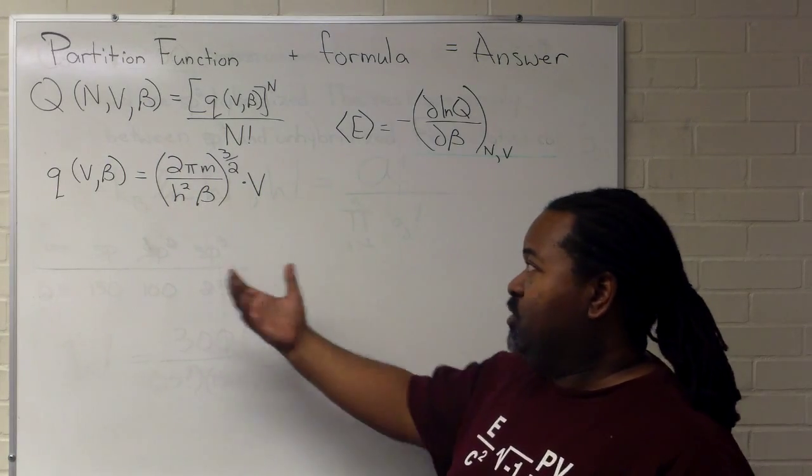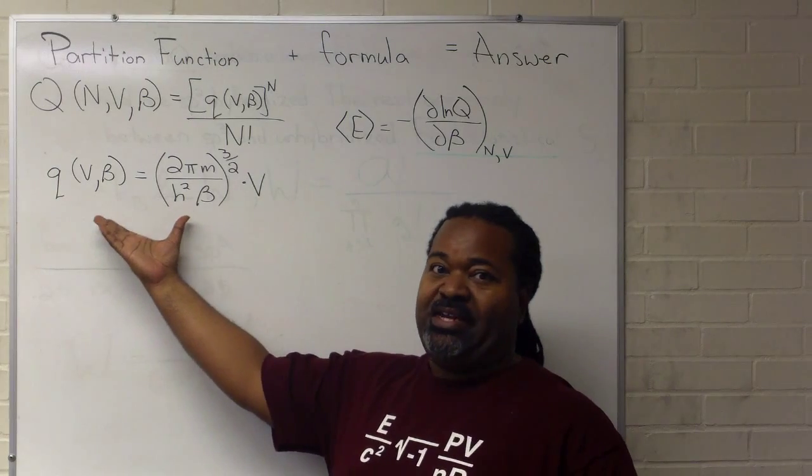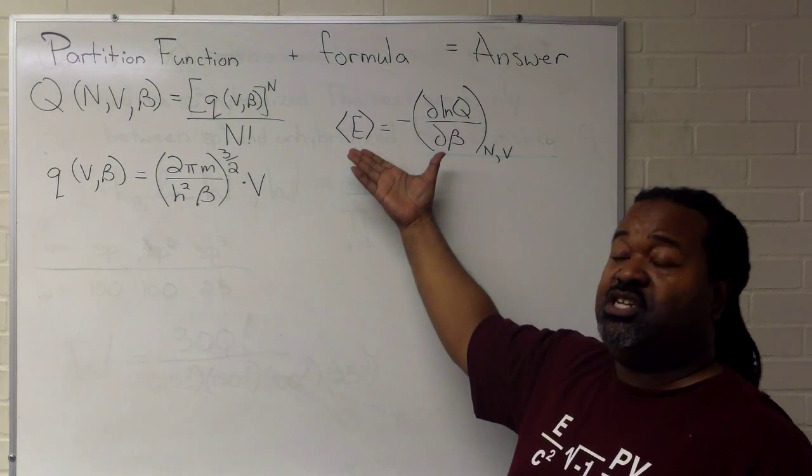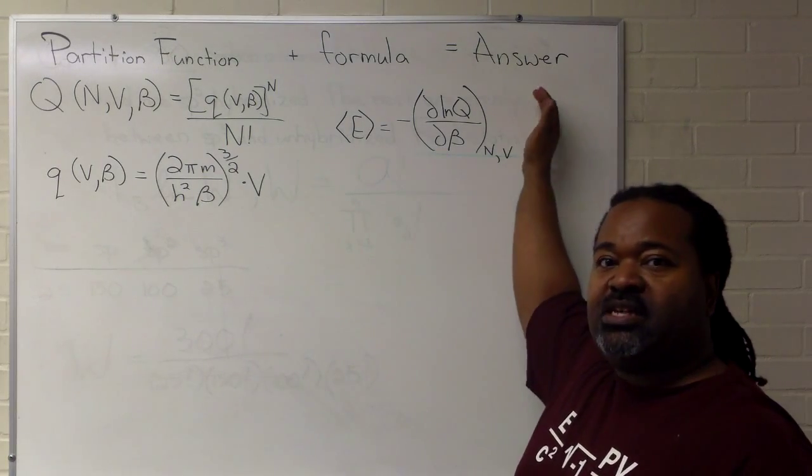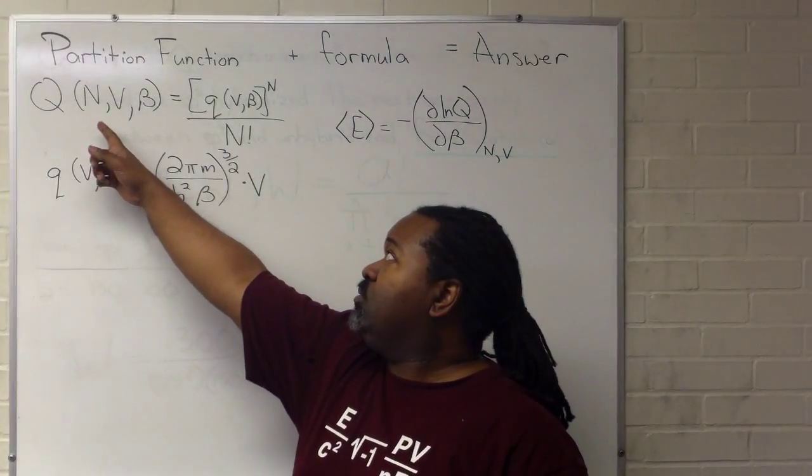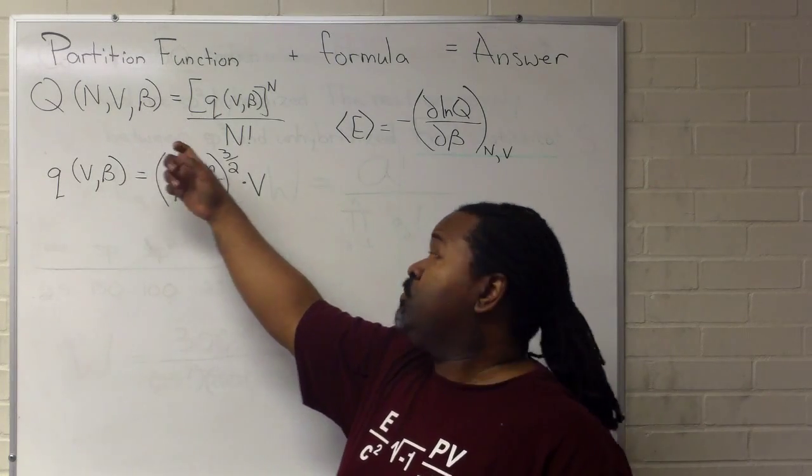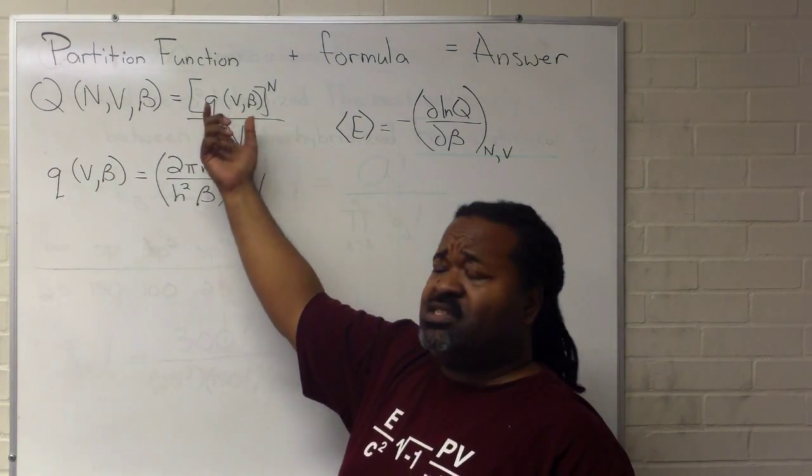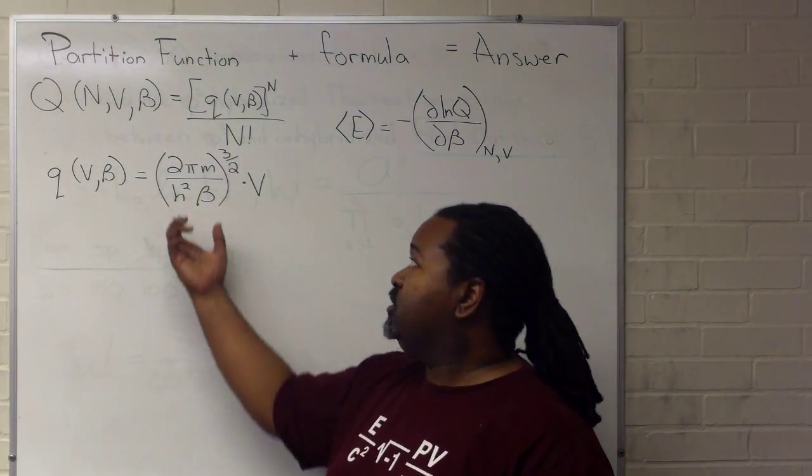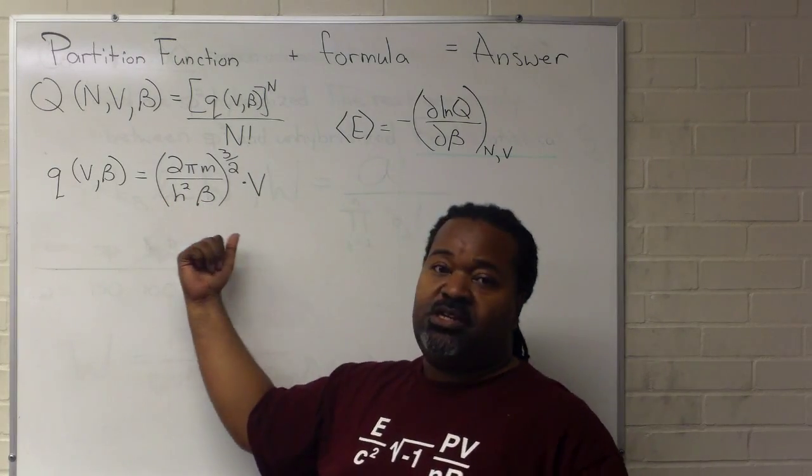In this case, we'll be using the partition function for the monatomic ideal gas and the instructions on how to use it to get an expression for average energy to get an actual formula for that. The partition function, big Q, relies on the number of particles, the volume, and a temperature term, and that's expressed in terms of little q, the individual particle partition function. In this case, because it is monatomic ideal gas, we have this formula here.